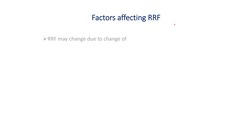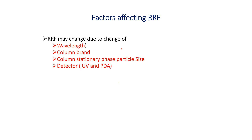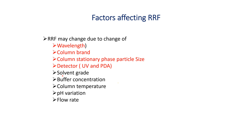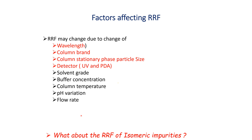Factors affecting RRF: RRF may change due to change of wavelength, column brand, column stationary phase (especially particle size), detector type (for example UV vs. PDA detector), solvent grade, buffer concentration, column temperature, pH variation, and flow rate. The question is: what about the RRF of isomeric impurities?